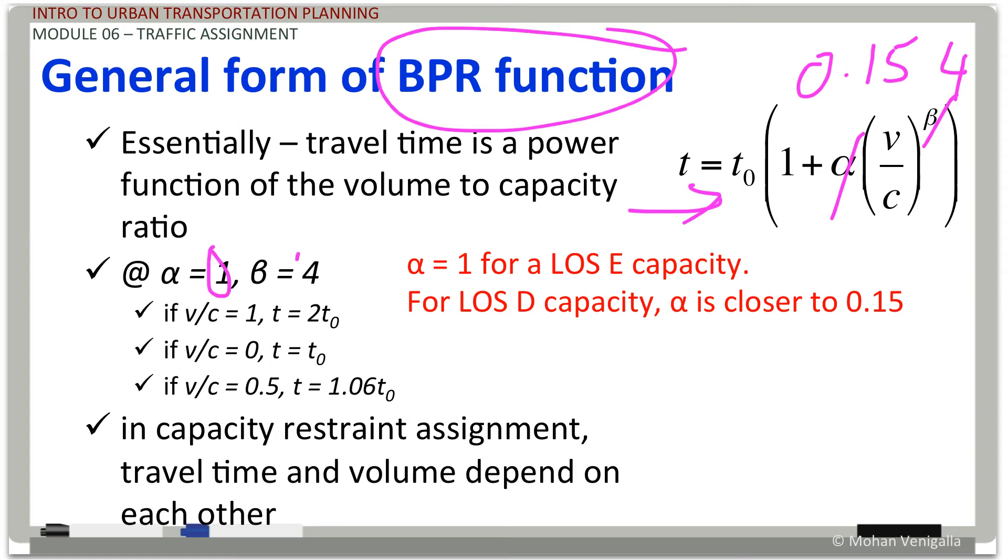If alpha value is 1 and beta is 4, at volume capacity ratio 1, your travel time is going to be twice that of T0, free flow travel time. Remember, T is a function of free flow travel time and volume capacity ratio, alpha and beta being constant.